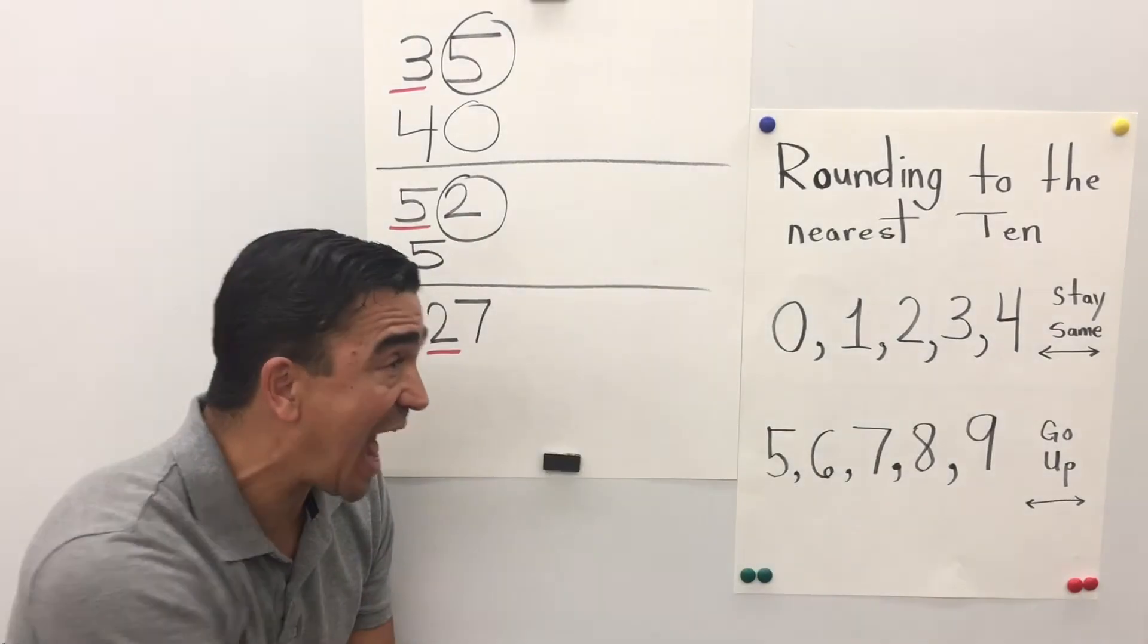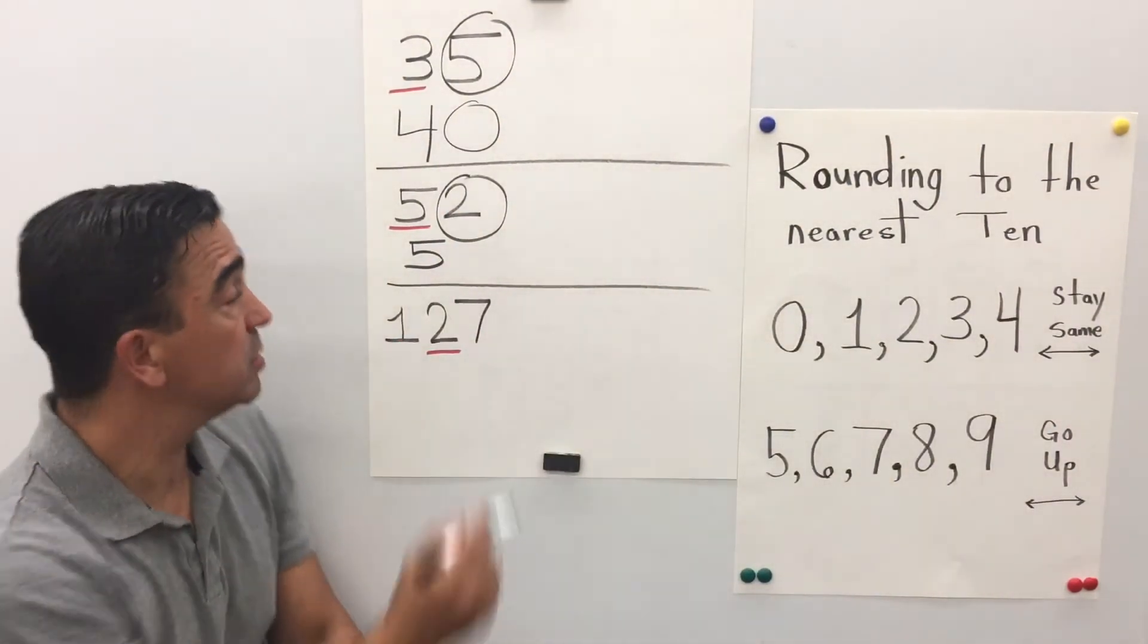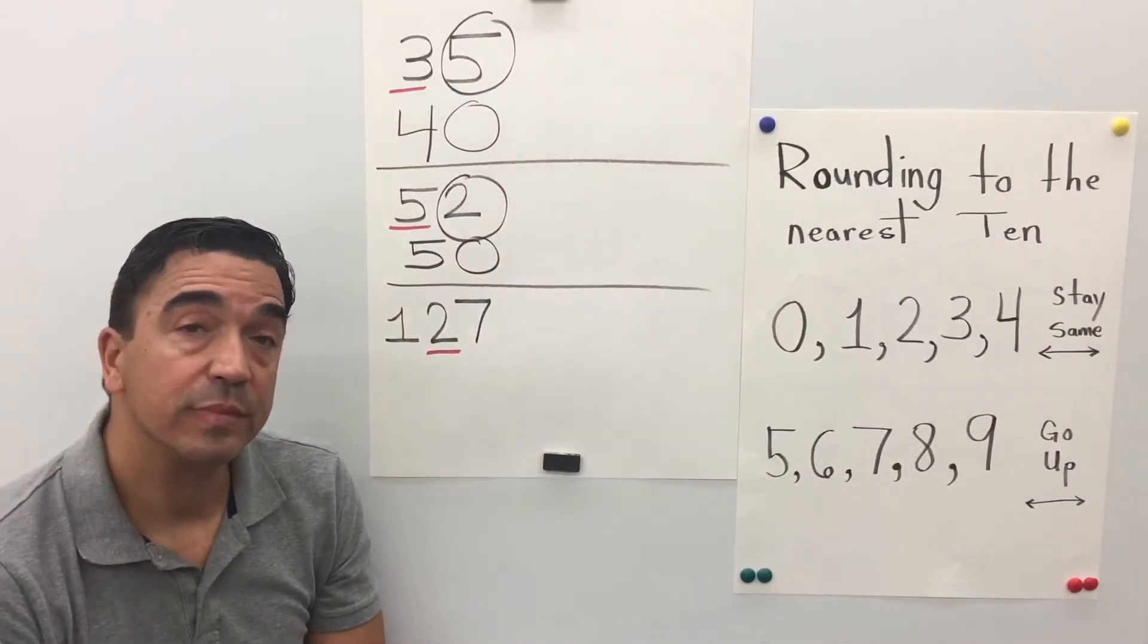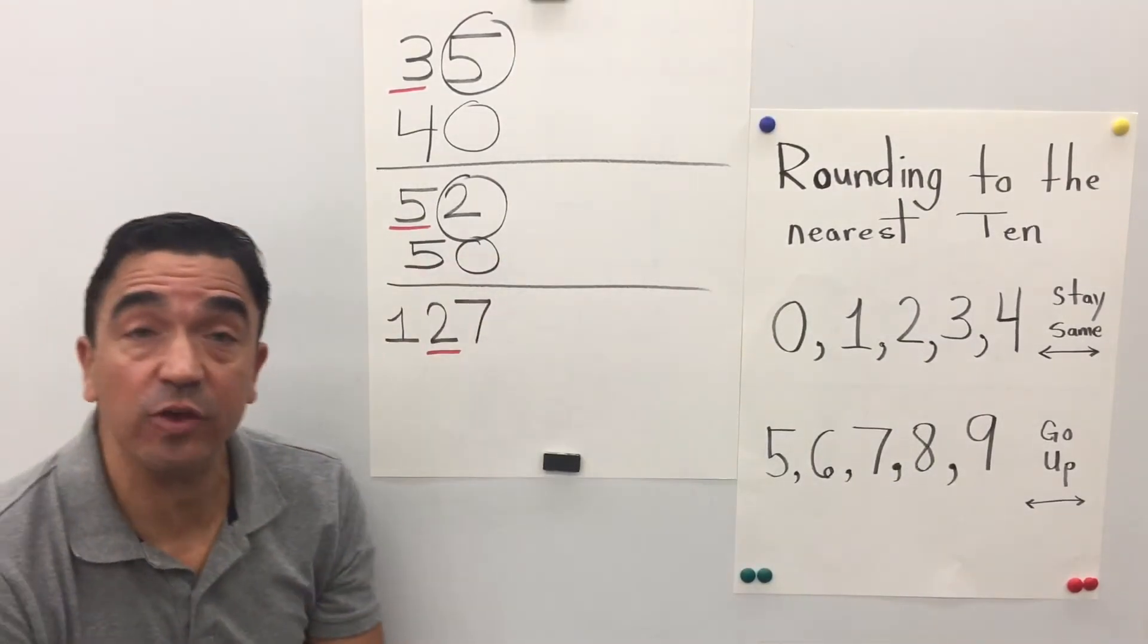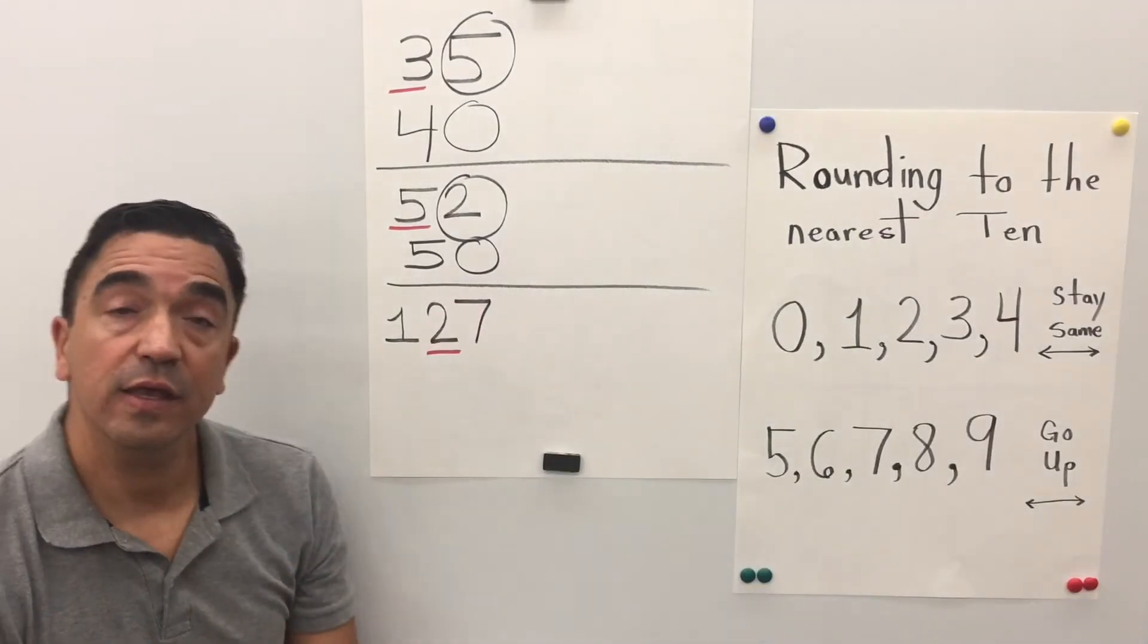And all the digits after, which is one digit, become 0. So 52 rounded to the nearest ten is 50.